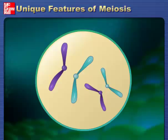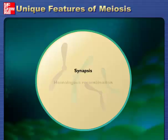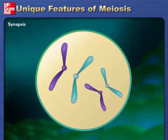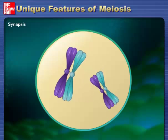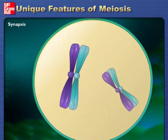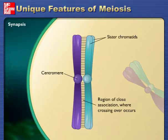Although mitosis and meiosis have much in common, meiosis has three unique features: synapsis, homologous recombination, and reduction division. Following chromosome replication, homologous chromosomes, or homologues, pair all along their length. The process of forming these complexes of homologues is called synapsis.